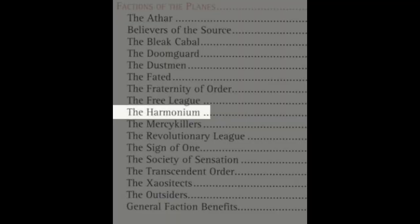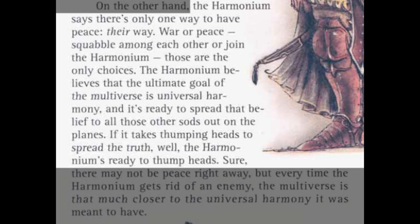For example, a faction called the Harmonium is described in the setting as follows: 'The Harmonium says there's only one way to have peace. Their way. War or peace, squabble among each other or join the Harmonium — these are the only choices. The Harmonium believes that the ultimate goal of the multiverse is universal harmony, and it's ready to spread that belief to all those other sods out on the planes. If it takes thumping heads to spread the truth, well, the Harmonium's ready to thump heads.' This type of mentality is present in some parts of the world in the form of government authoritarianism and religious fundamentalists. It's their way, or the highway.